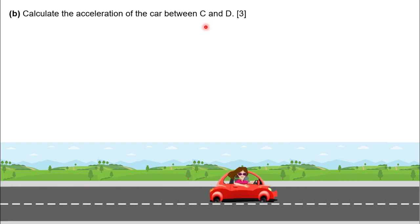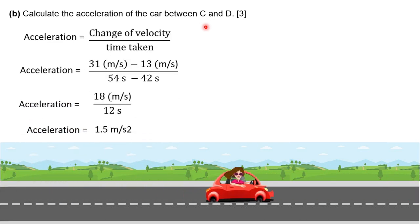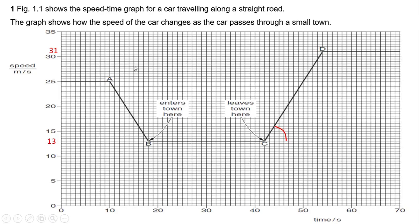As you know, we can measure acceleration by using the equation. Our equation is acceleration equals change of velocity divided by time taken. Here, our final velocity is 31 meters per second and initial velocity is 13 meters per second. Hence, the velocity change is 18 meters per second.